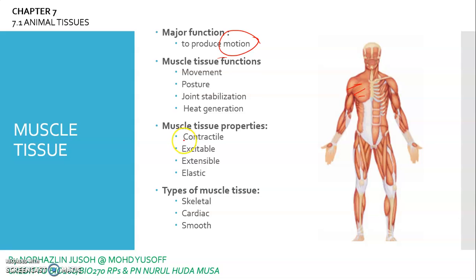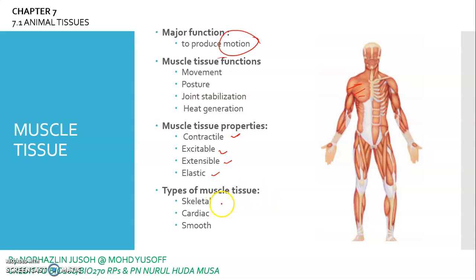The properties of muscle tissue are: contractile, excitable, extensible, and elastic. Muscle tissue can be divided into three types: skeletal, cardiac, and smooth. We will go into detail for each one.